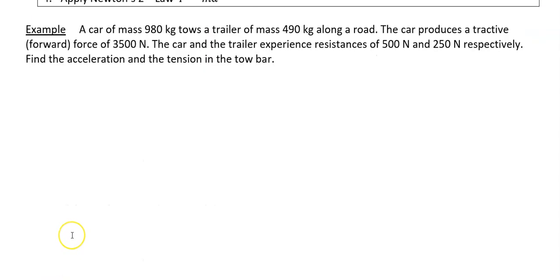The first example says: a car of mass 980 kg tows a trailer of mass 490 kg along a road. The car produces a tractive force of 3500 newtons. The car and trailer experience resistances of 500 newtons and 250 newtons respectively. Find the acceleration and the tension in the tow bar.